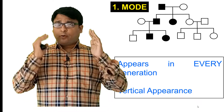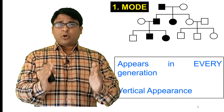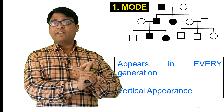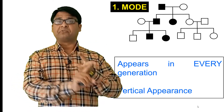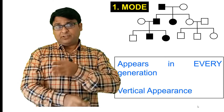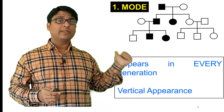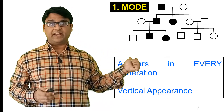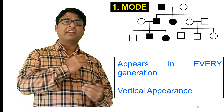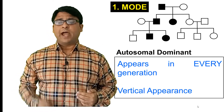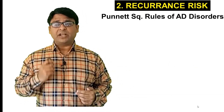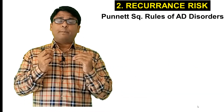For autosomal dominant disorders, you have to worry about two things: identify the mode of inheritance and identify the recurrence risk. There is no carrier status. We have dealt with the mode of inheritance — it should be very clear. If it's not, please rewind the video and watch it again. Now let's discuss the recurrence risk.